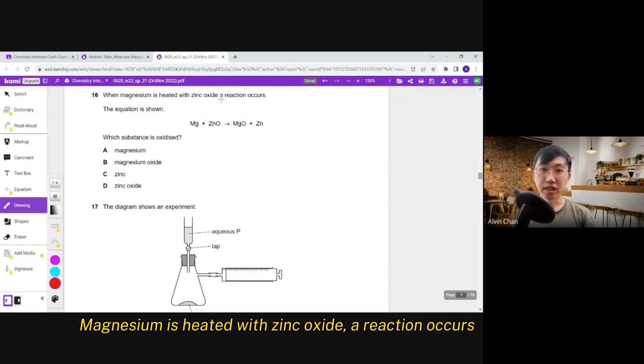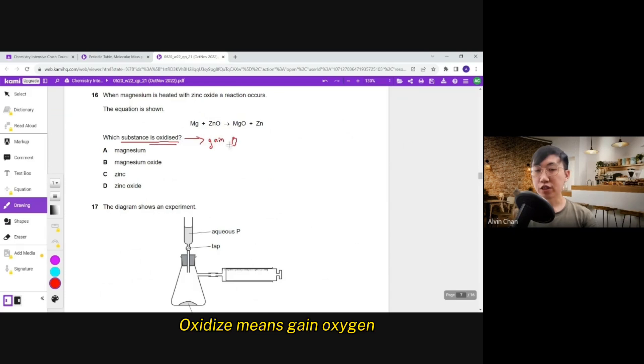Magnesium is heated with zinc oxide. A reaction occurs. Which substance is oxidized? Oxidized means gain oxygen. Look who gain oxygen. Magnesium become magnesium oxide. So magnesium gain oxygen. Understand? Very fast. Magnesium gain oxygen. Done. That's it. So this is 16. Magnesium oxide gain oxygen out. Zinc gain oxygen out. Zinc oxide gain oxygen out. So very clearly 16 is just one second. Done.